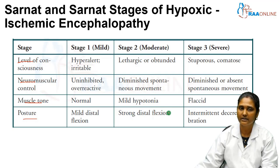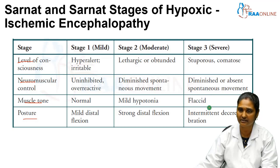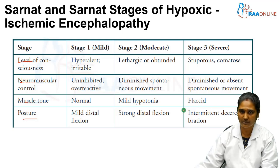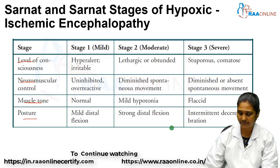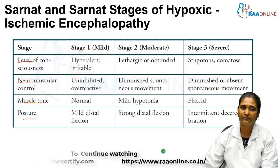In stage 3, the newborn goes into a stuporous or comatose state. There will be completely absent spontaneous movement. Muscle tone becomes flaccid, giving a frog-like appearance. There will be intermittent decerebrate posturing due to increased cortical activity. These four things come under the CNS features, and next we move on to the reflexes.